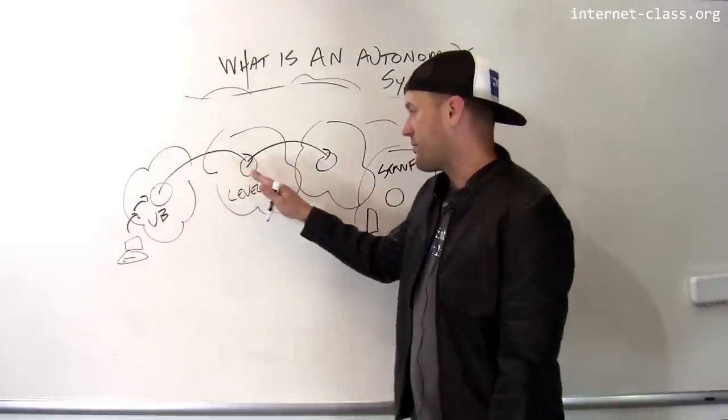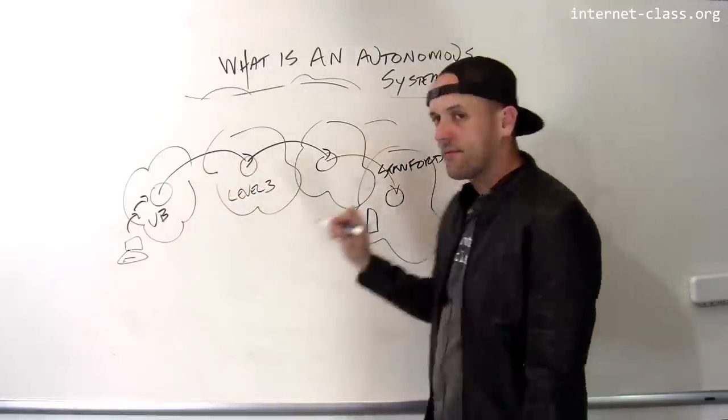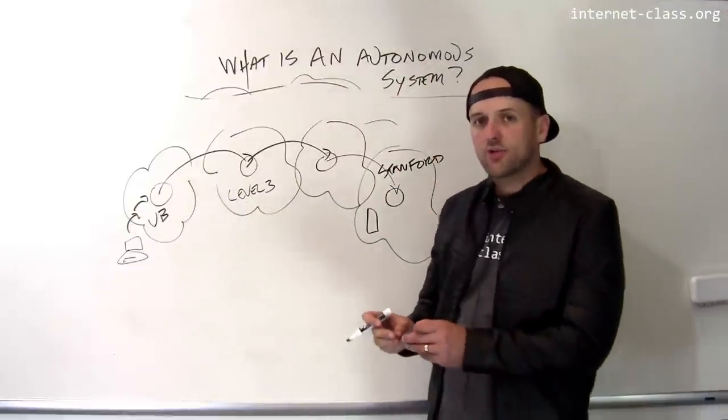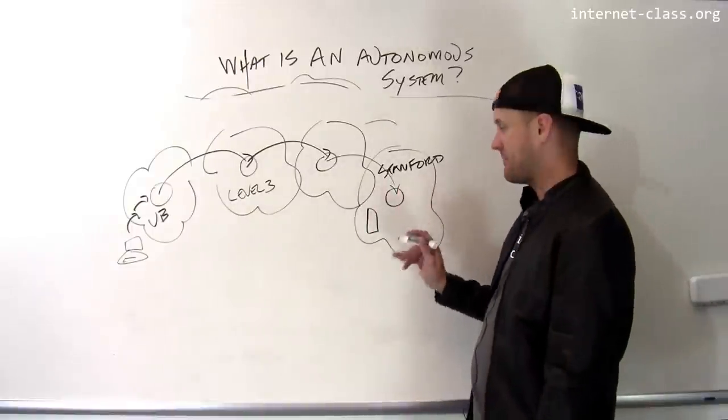These autonomous systems are cooperating to move the packet toward the destination autonomous system, which in this case is Stanford's network. In this case, it might cross Level Three and maybe across some other ISP. Finally, it's going to be delivered to the router that Stanford has set up to handle traffic that's either arriving at or departing from its autonomous system.